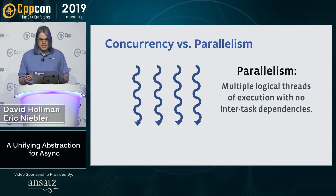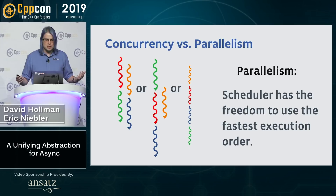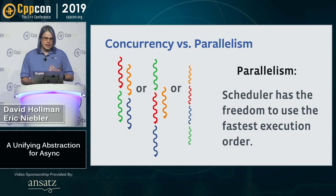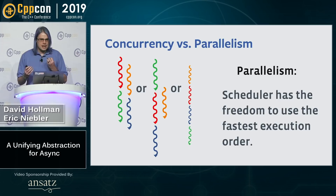Parallelism is the opposite of that: it involves a promise by the user to the scheduler that there are none of these inter-task dependencies. That means the scheduler has the freedom to schedule tasks however it wants—one allowed schedule is even running them all backwards. Parallelism does not necessarily imply any kind of simultaneous lifetime. Parallelism is a promise by the user.